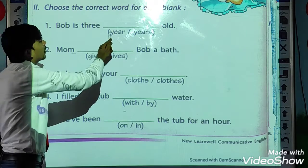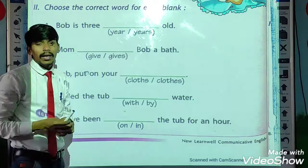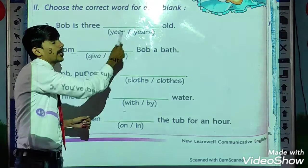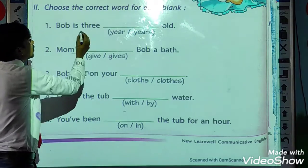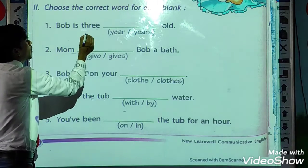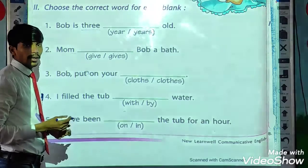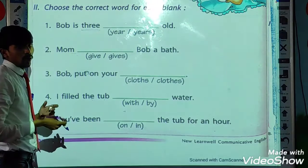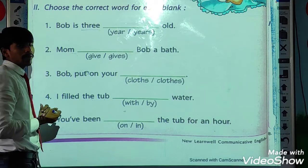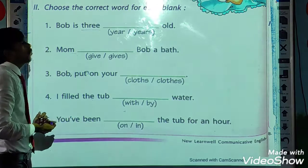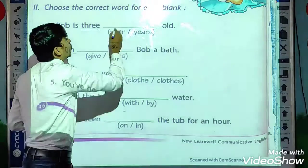Let's read the first one: Bob is three dash old. The choices are 'year' or 'years.' Now see, it is three — three is plural. So what do we have to use here? Bob is three years old.